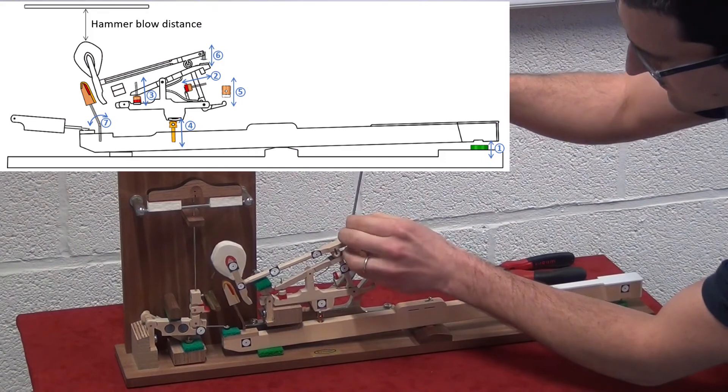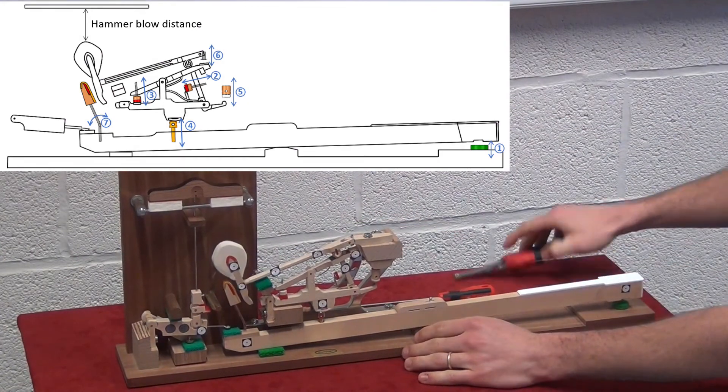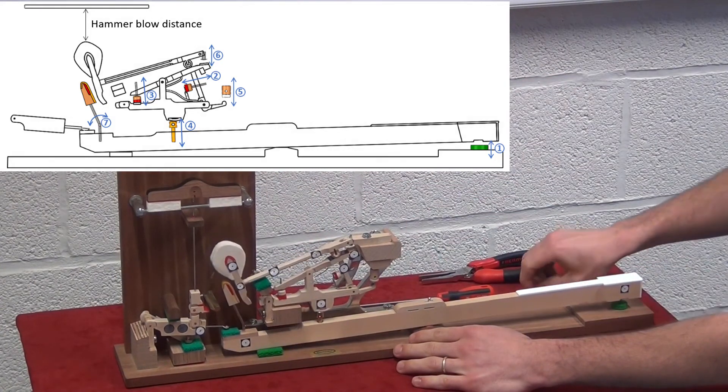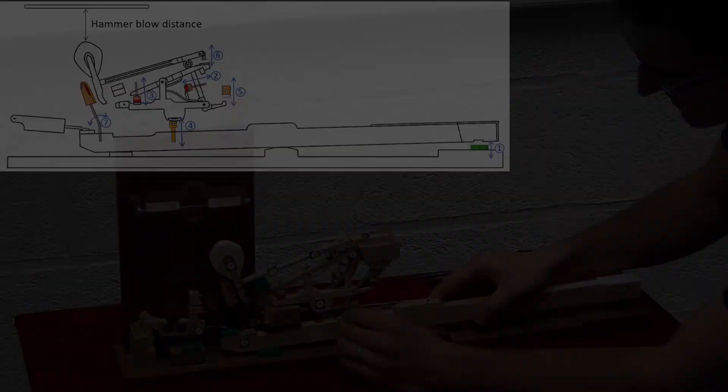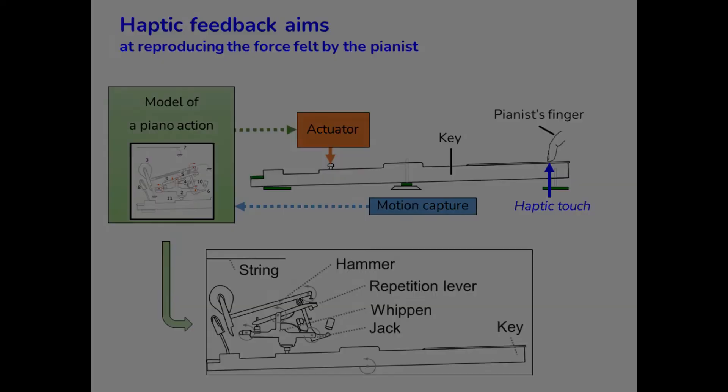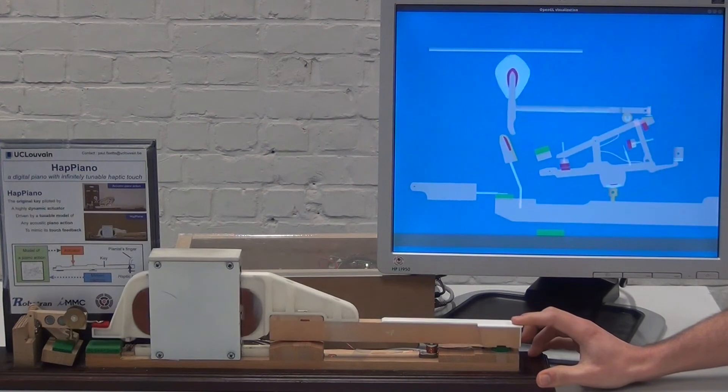Another feature of the piano action is that it contains a lot of settings that the piano tuners have to check. Those settings influence the action behavior, the sound, but also of course the touch. In our multibody model, we can change the settings, and thanks to our one-key demonstrator, we can feel the resulting haptic feedback.